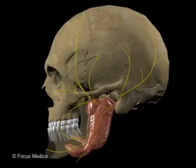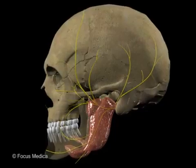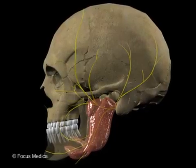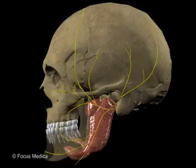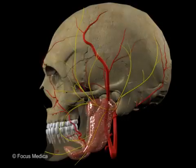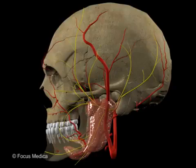Besides this, there is an autonomic component, which hitchhikes its way through the peripheral nerves — parasympathetic, secretomotor — or through the blood vessels — sympathetic, vasomotor.